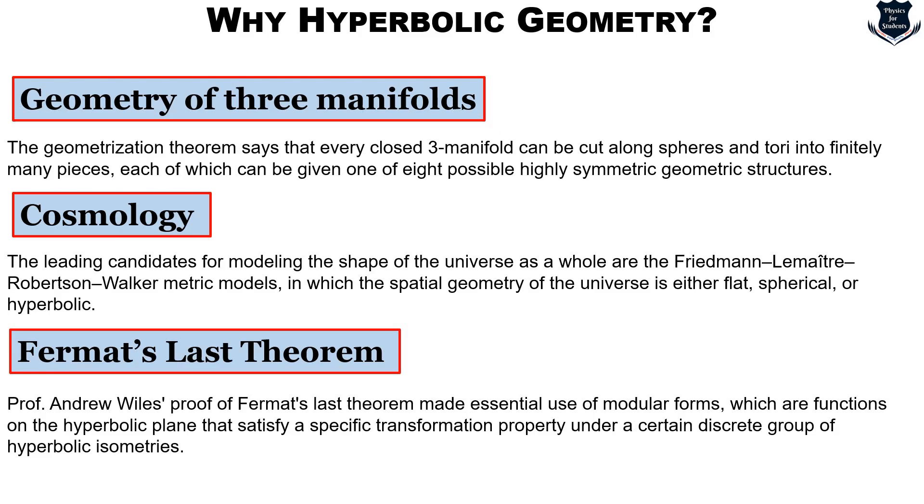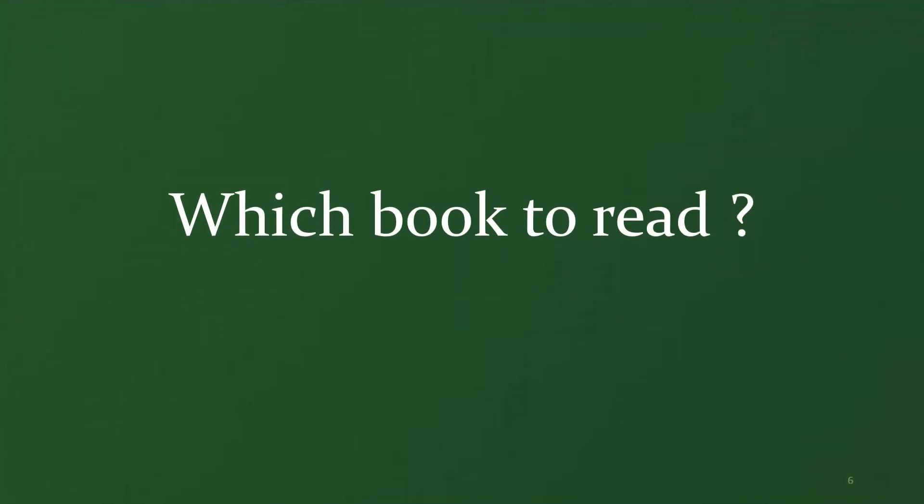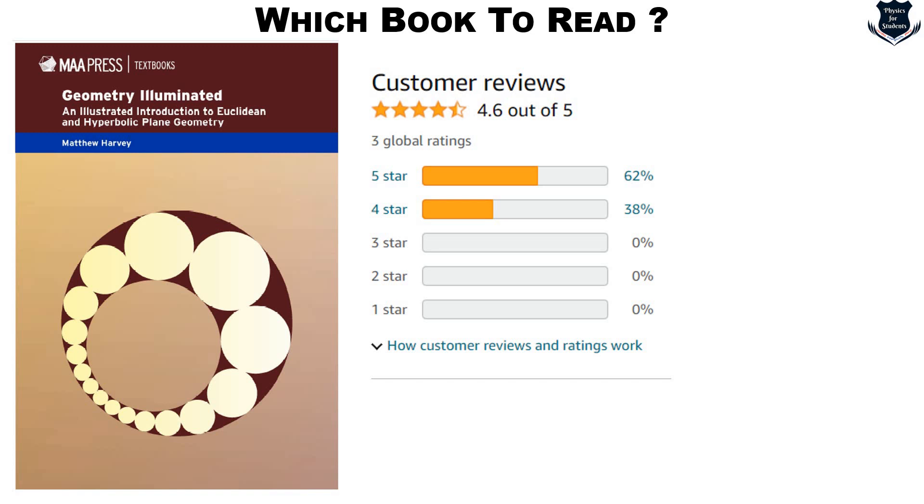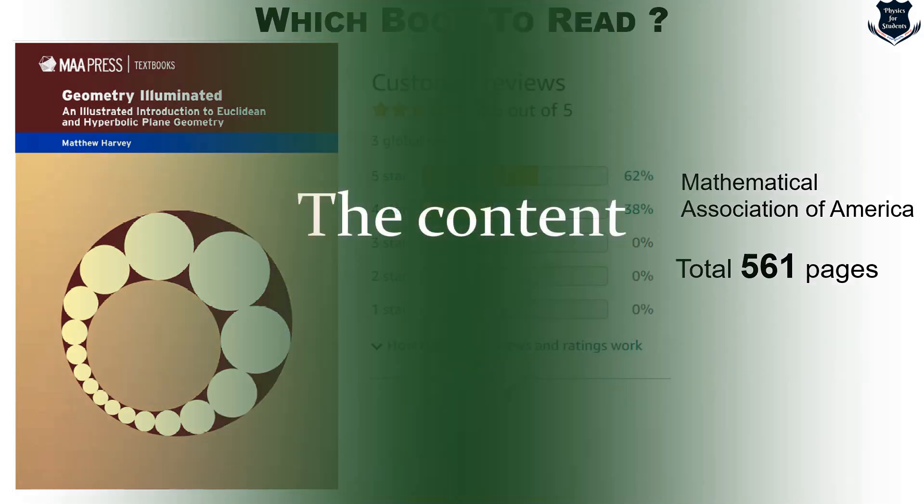This is the importance of hyperbolic geometry and now we move to what is the book that we are talking about, what is that magical book that assumes nothing but teaches you everything. So this is the book Geometry Illuminated and it is written by Professor Matthew Harvey. More or less this is the customer review up to 62% or something and this is written by M.A.A. that is Mathematical Association of America and it is quite a dense book of 561 pages.